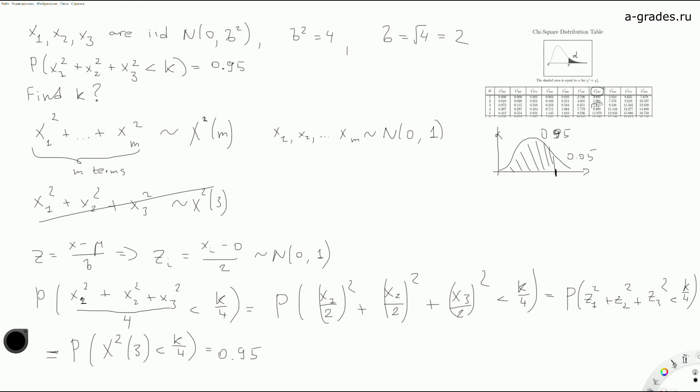So we understand that k divided by four equals 7.815. K equals, we just multiply this value by four and get 31.26, which is the answer.